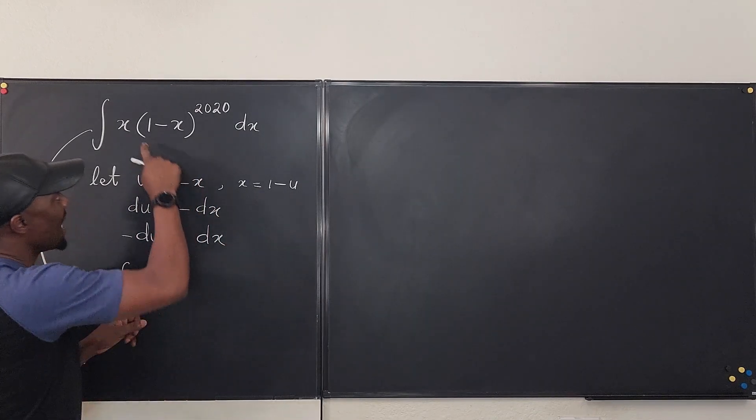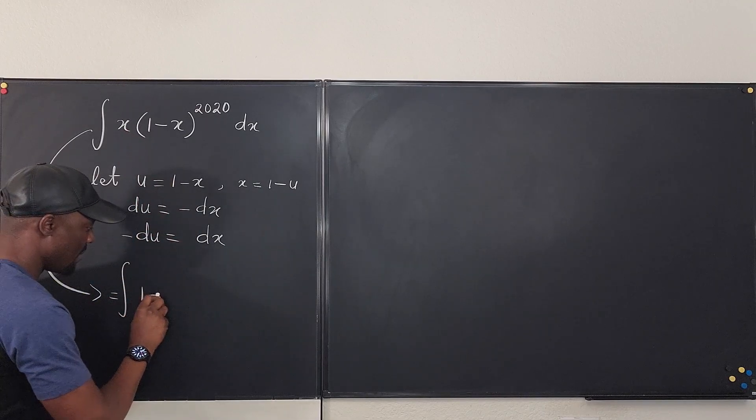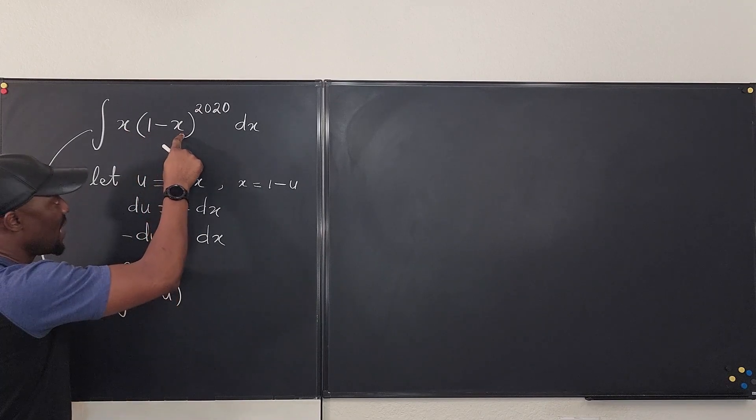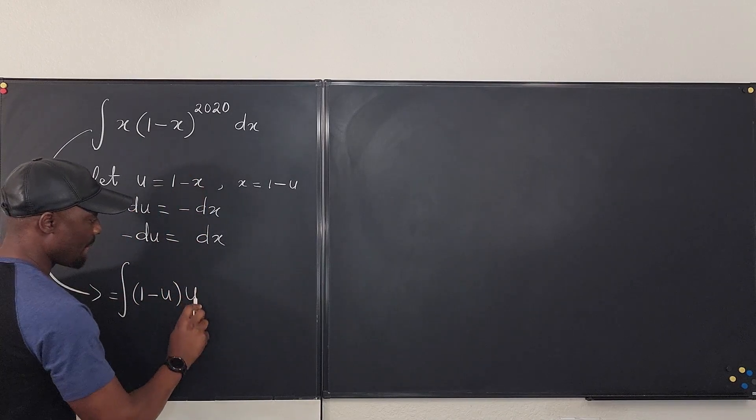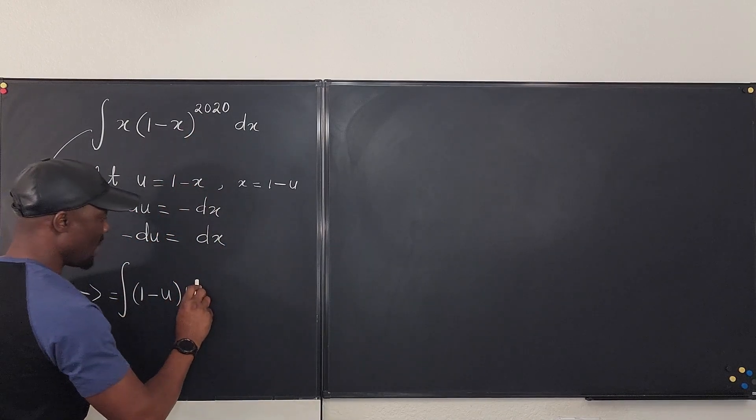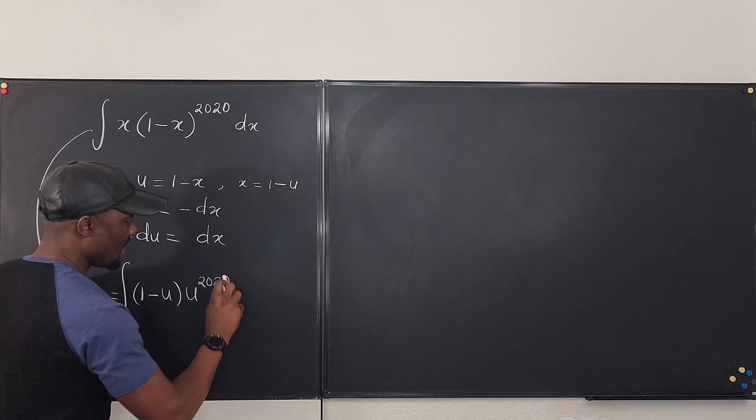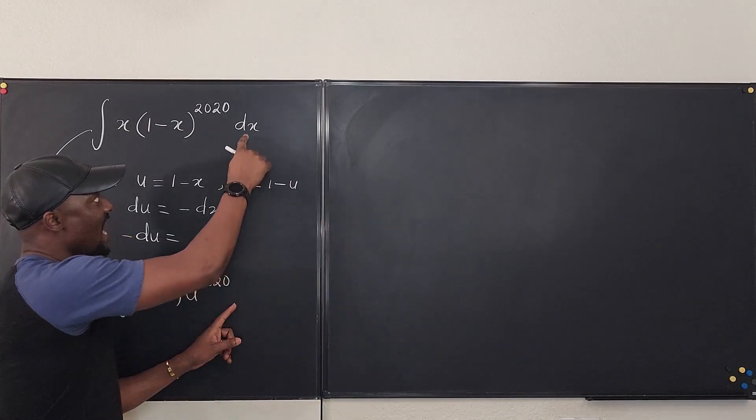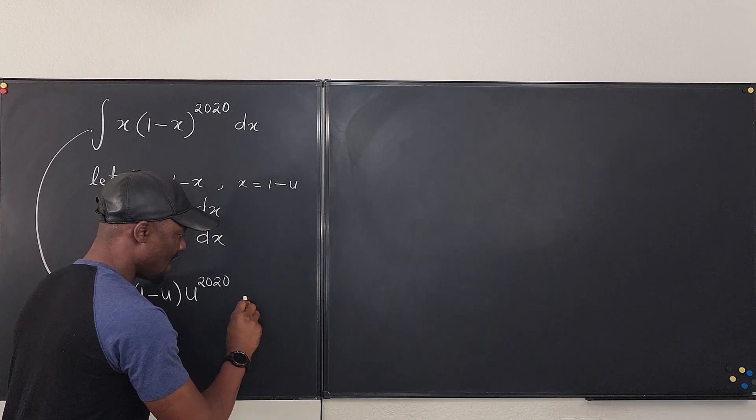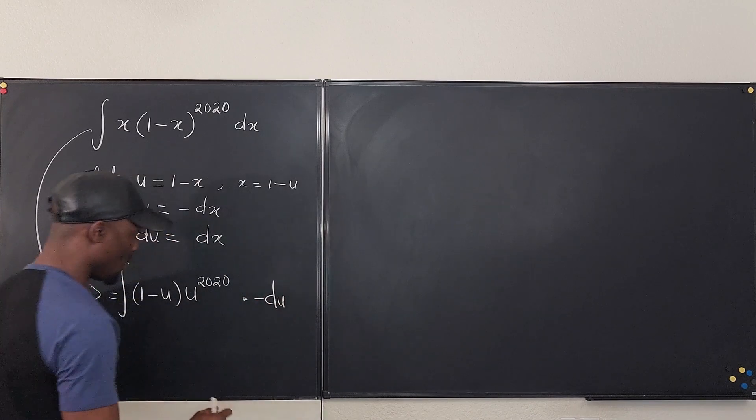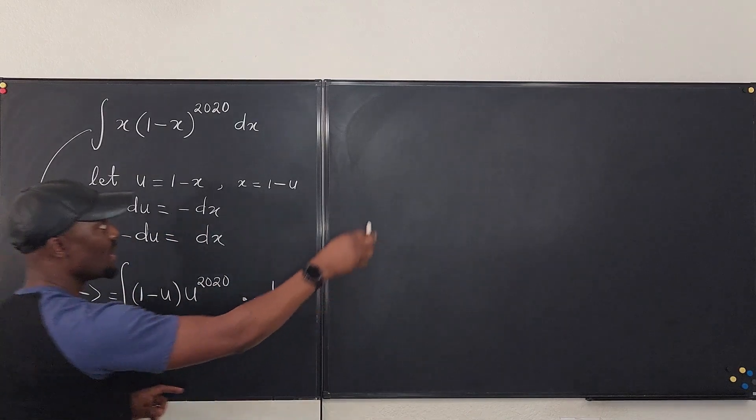So instead of writing x now I'm writing 1 minus u, and instead of writing 1 minus x I'm writing u but the u is now raised to power 2020. And instead of writing dx I'm going to replace it minus du times minus du, so this new problem becomes this.